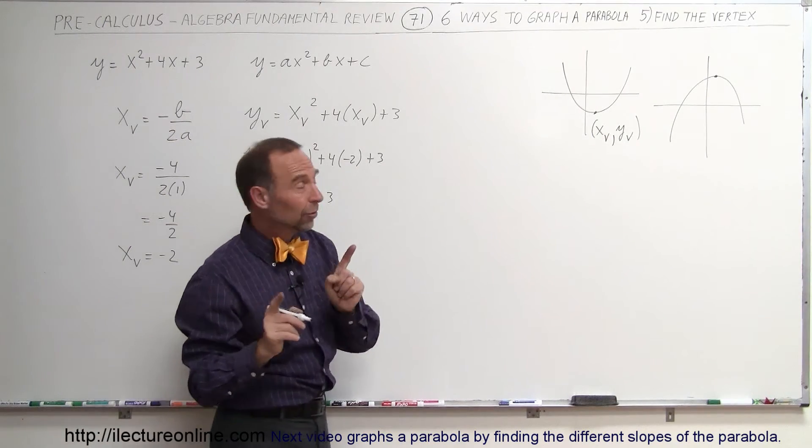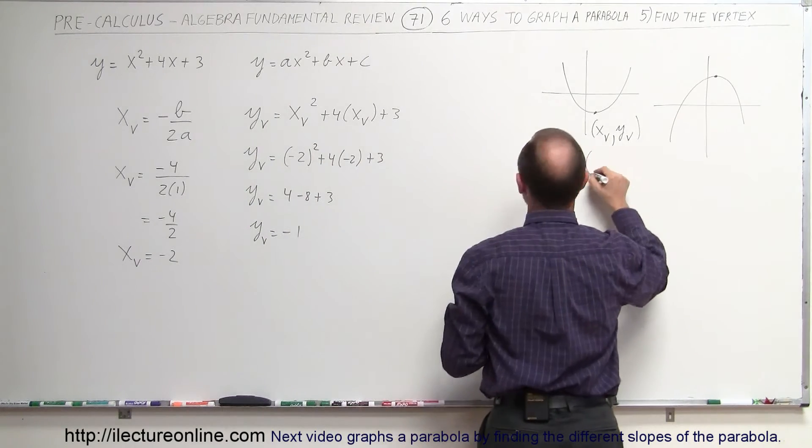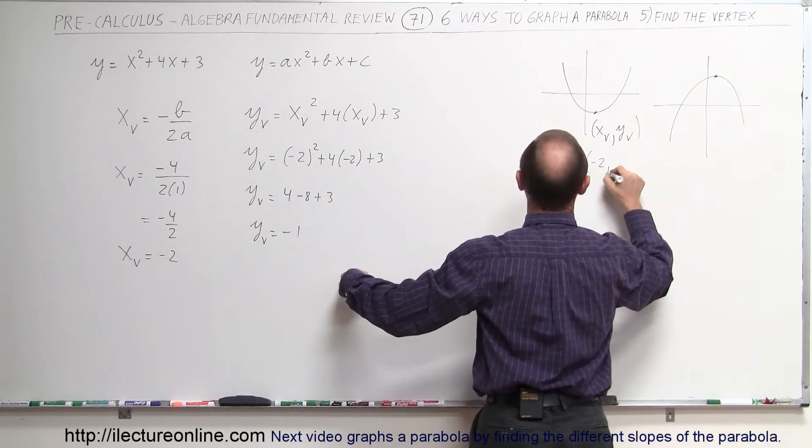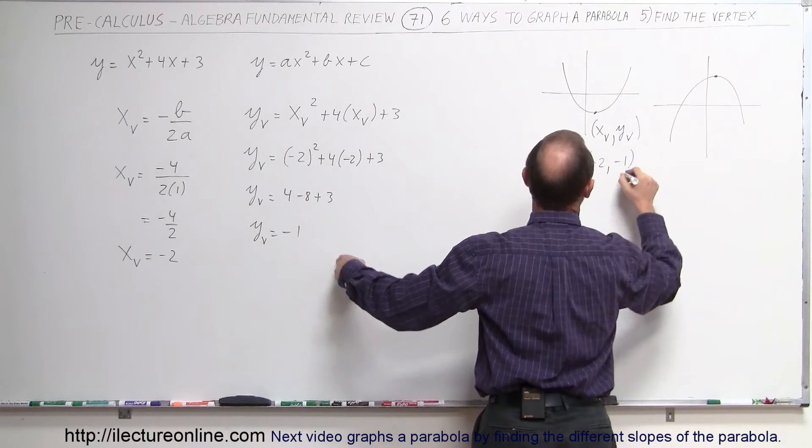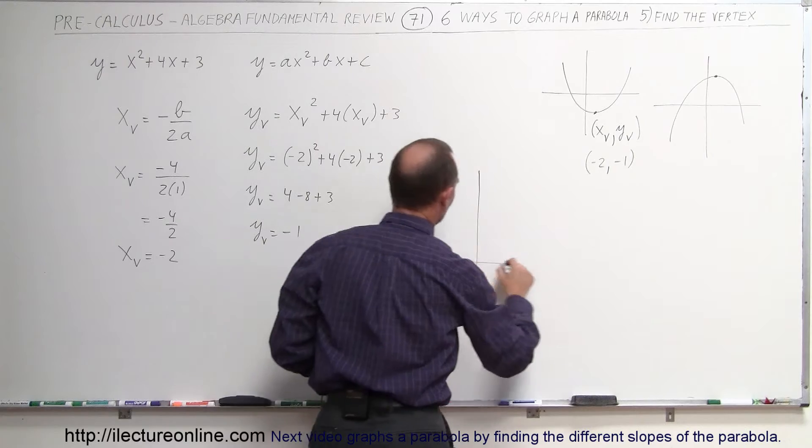Which means that the point, the lowest or the highest point of the parabola, in our case is going to be the value of minus 2 for the x-coordinate and minus 1 for the y-coordinate. So when we start graphing the parabola, it's going to look something like this.